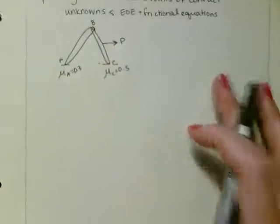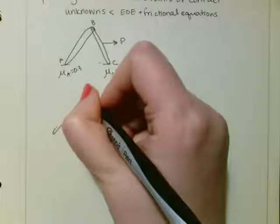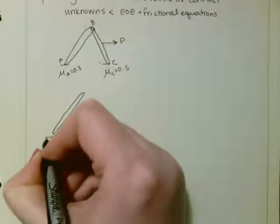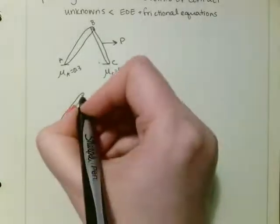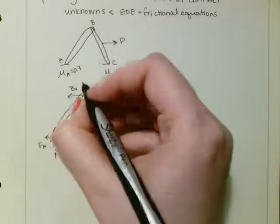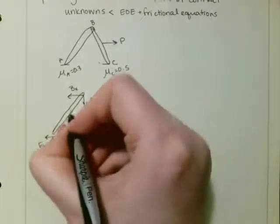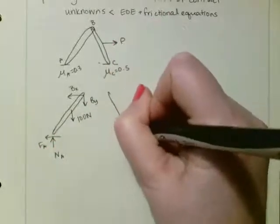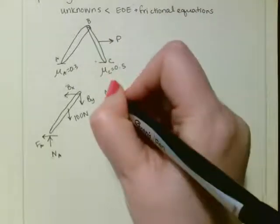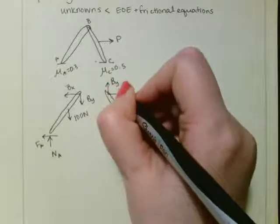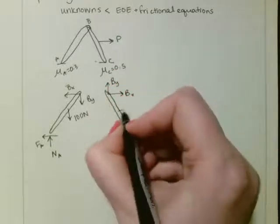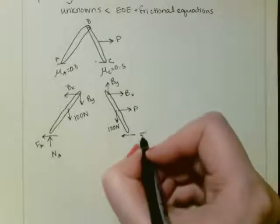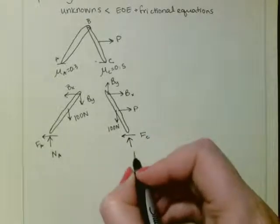So now when I draw my free body diagram, I have from A to B, I've got NA and FA and BX, BY, 100 Newtons. On this side I'd have BY, BX, then I have my horizontal force P and my 100 Newtons. Then I would oppose the motion, FC, and then NC.